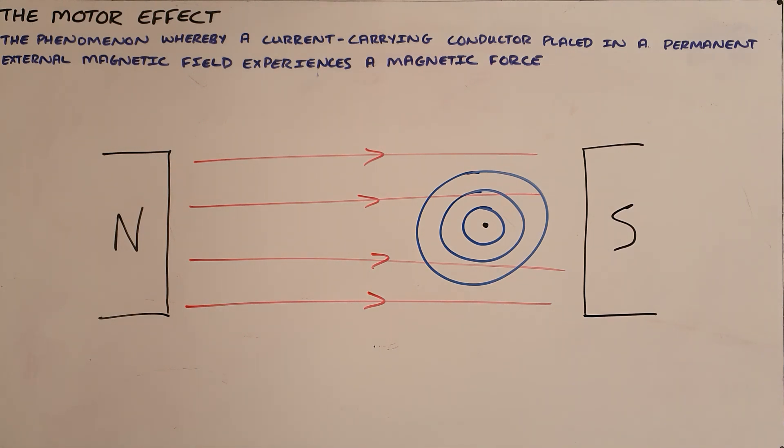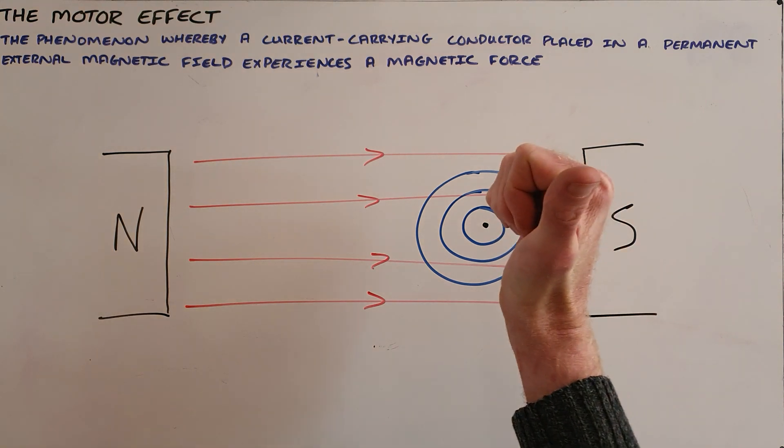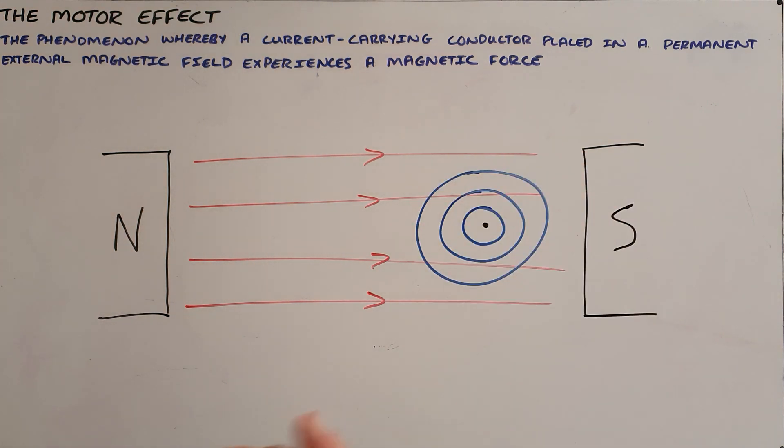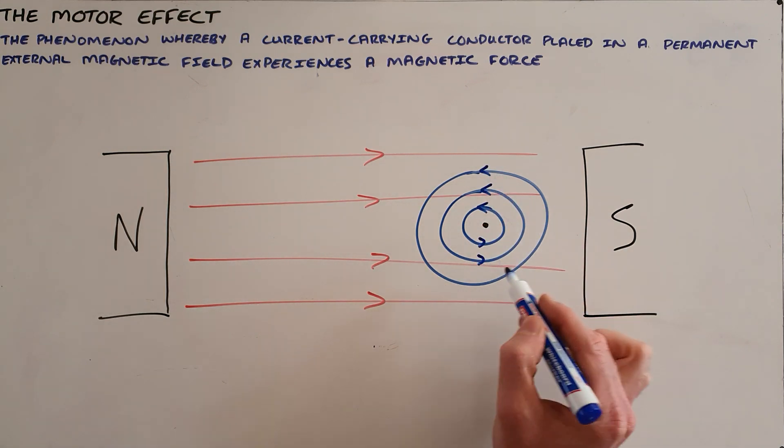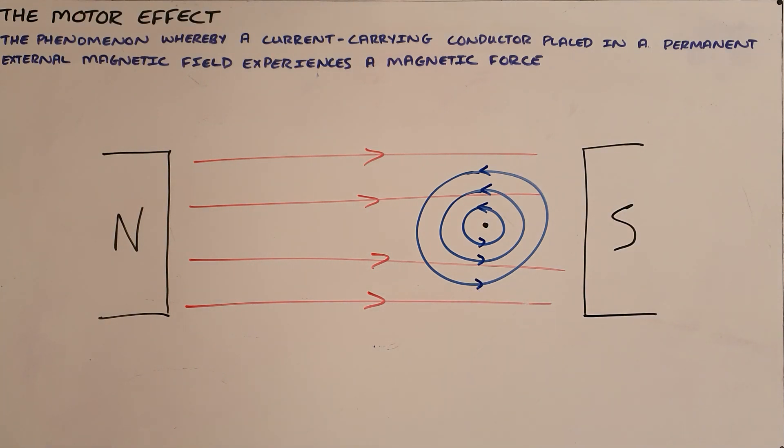We can determine the direction of that magnetic field using the right hand wire rule, which tells us that the magnetic field is directed in a counterclockwise direction around that current carrying conductor.